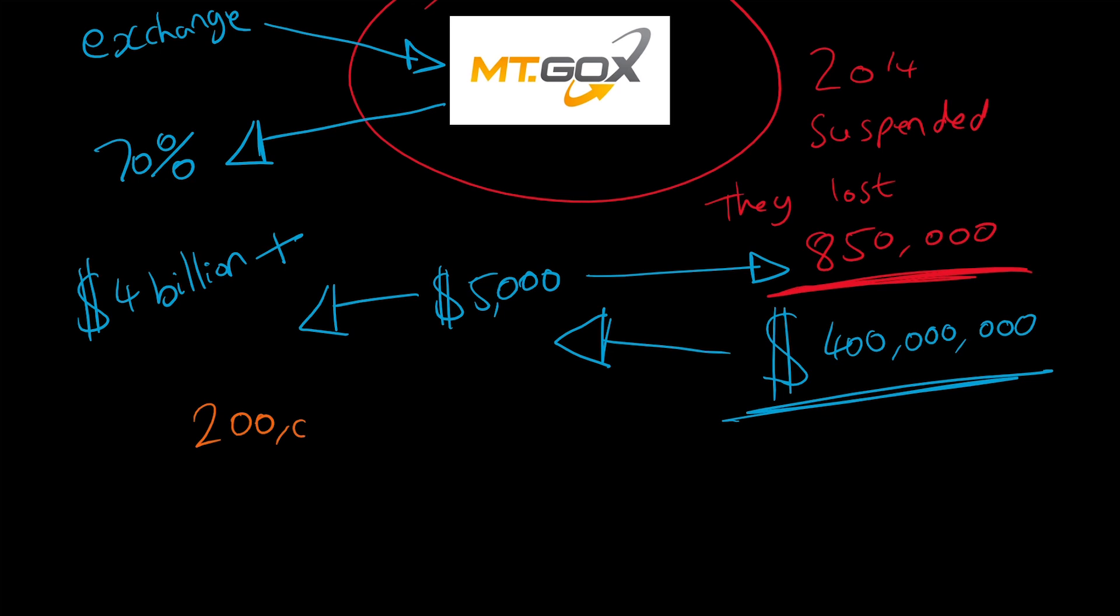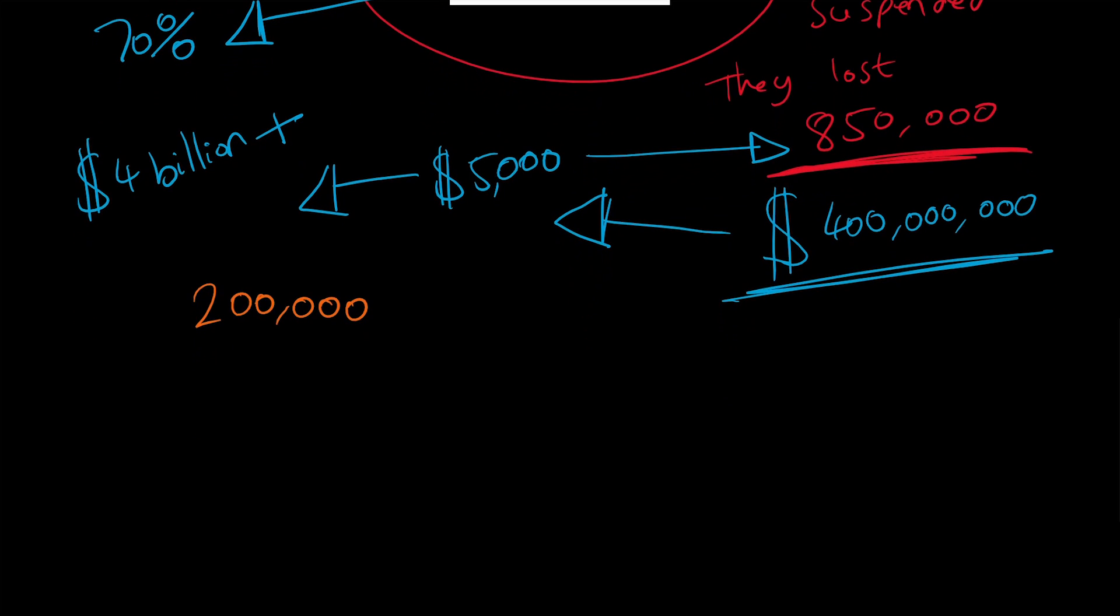There were a mixture of reasons why the coins got lost. Fortunately over 200,000 have been retrieved, but there are many reasons why the coins were lost. Theft occurred and the bitcoins were lost. People within the company were taking coins, and I think they had been doing that since 2011. So three years they had been stealing.